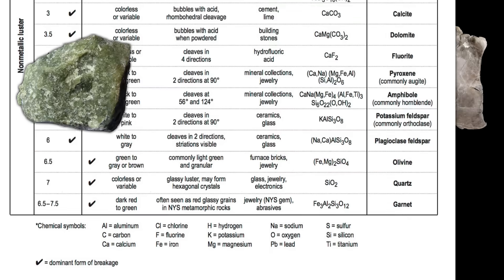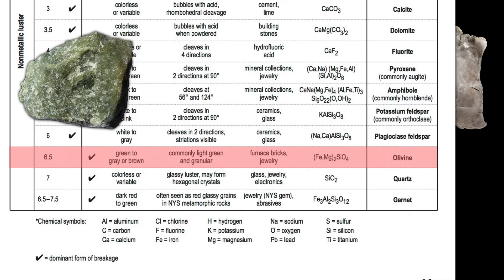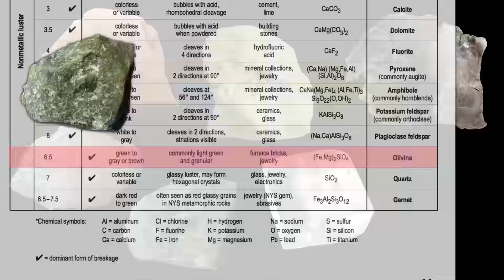Here's another example. This is olivine. You can see it's a much harder mineral, displays fracture, it's non-metallic, and it can be used in jewelry. You can see its chemical composition right there on the chart.